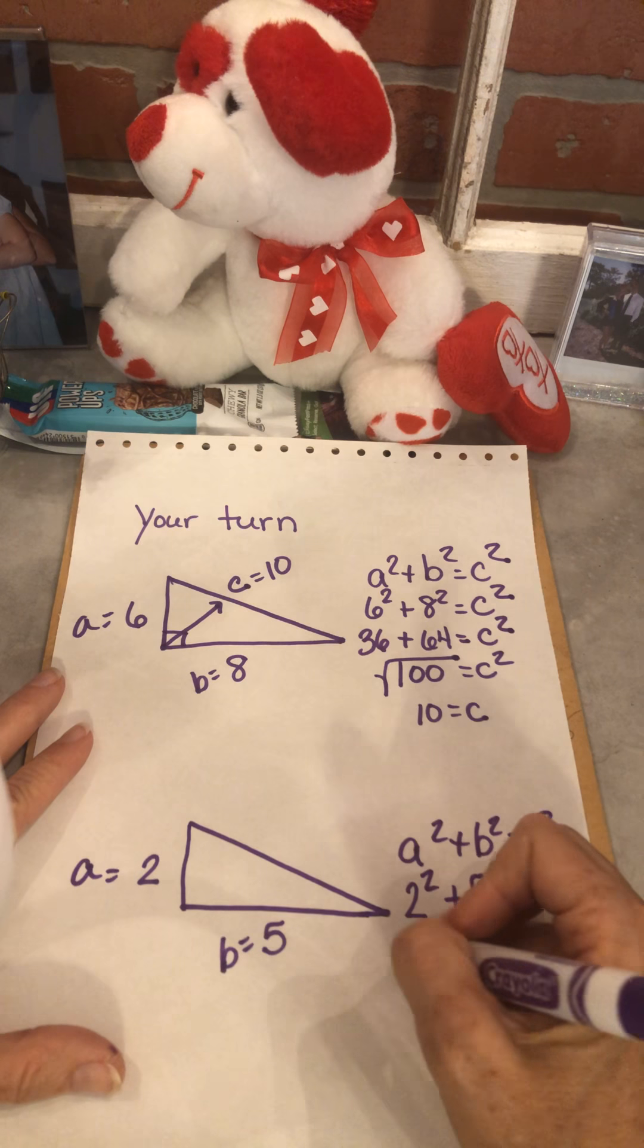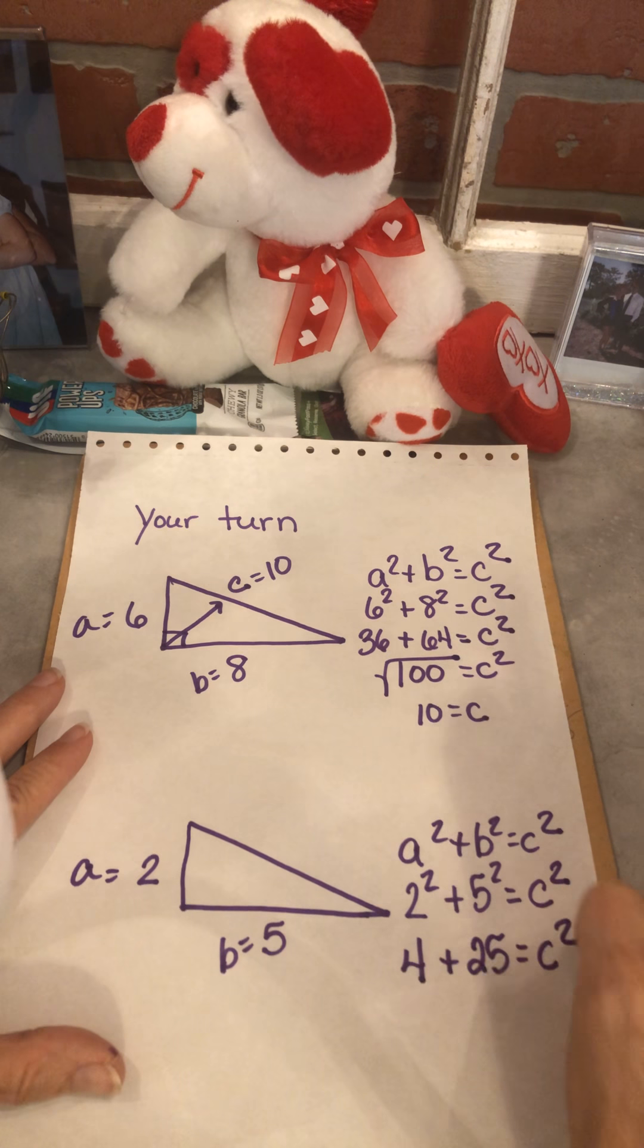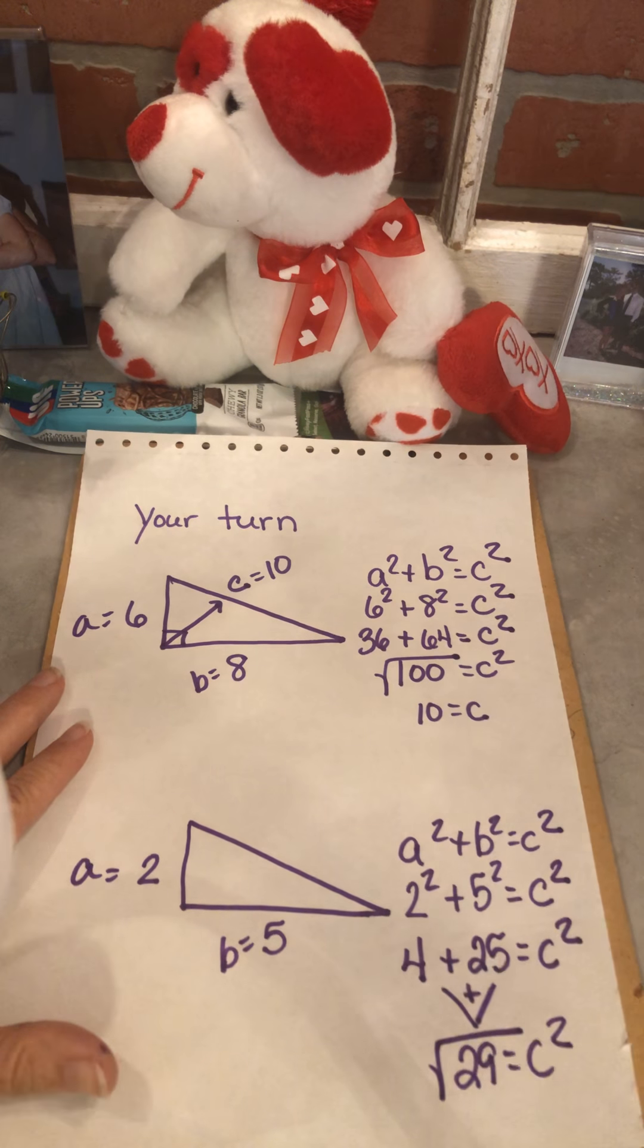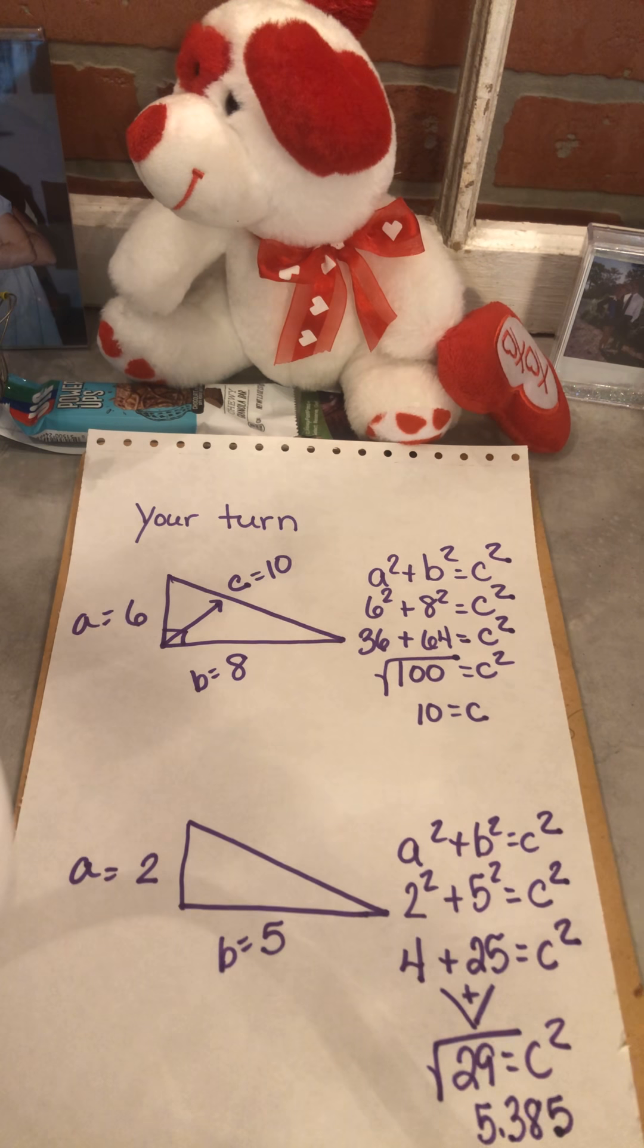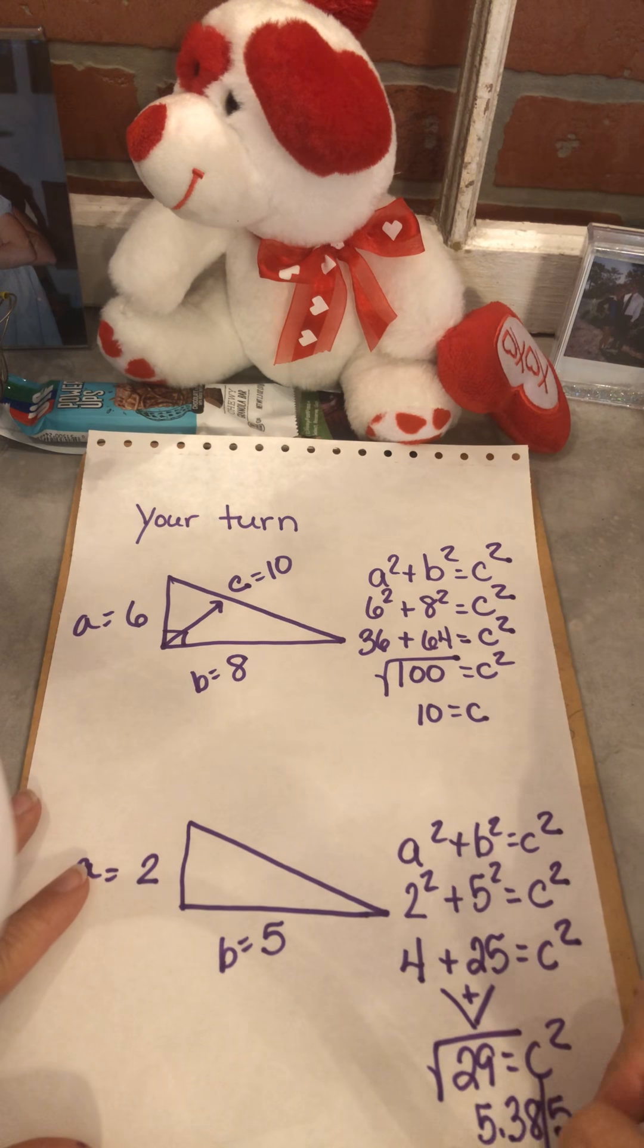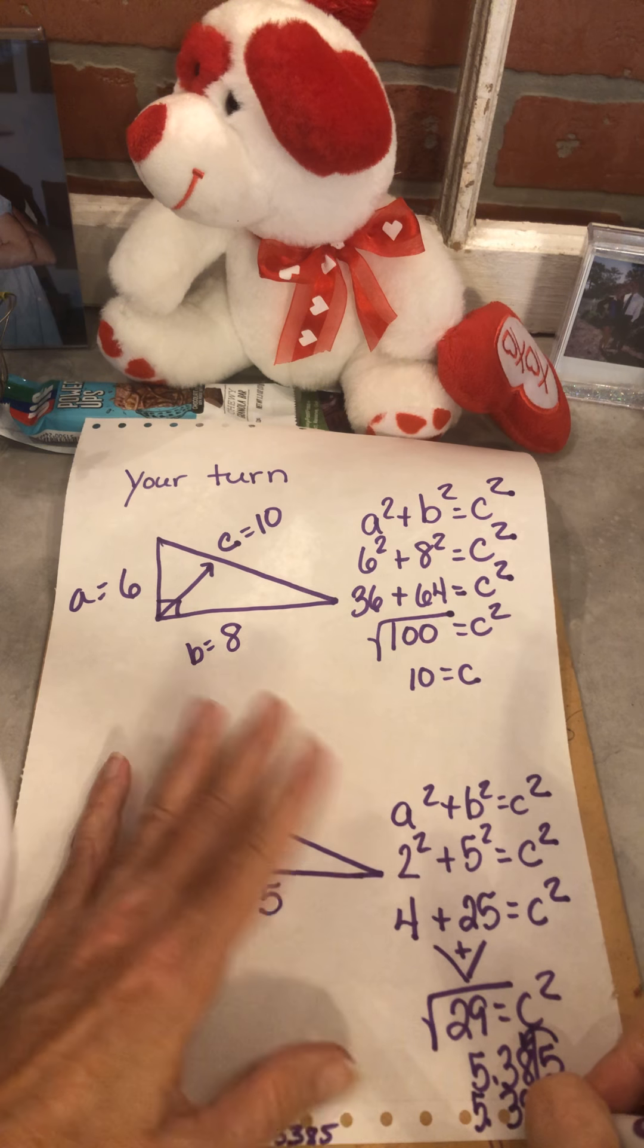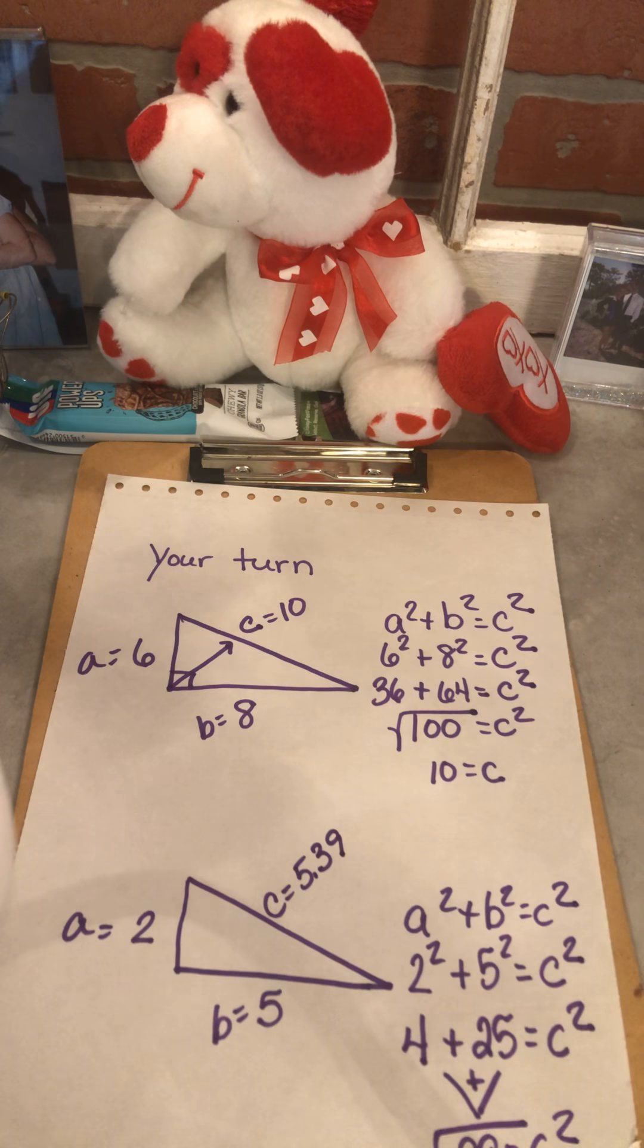Here we go. a squared plus b squared equals c squared. a, b, 2 squared plus 5 squared equals c squared. 2 squared is 4, 5 squared is 5 times 5, which is 25. Add that up, get the square root, and I get 5.385. And let's say I said round this to the nearest hundredth. So if I said round it to the nearest hundredth, I draw my line there. Here's my tenth, here's my hundredth. The 5 says bump that up, so I would end up with 5.39.